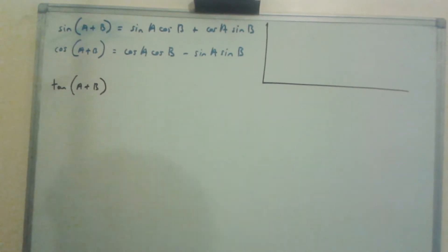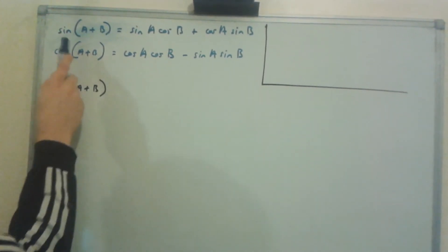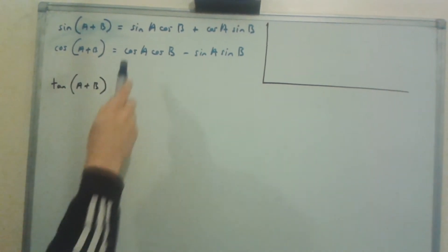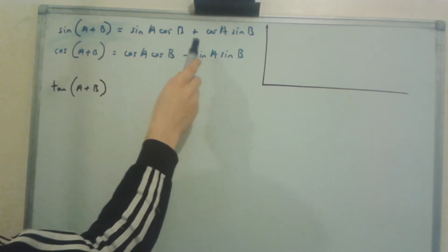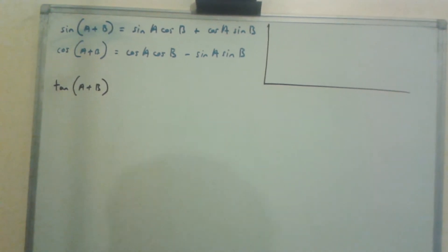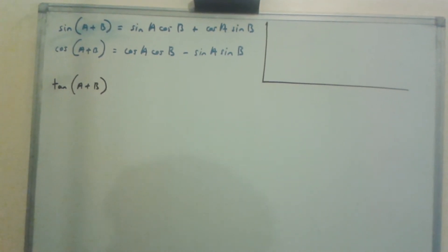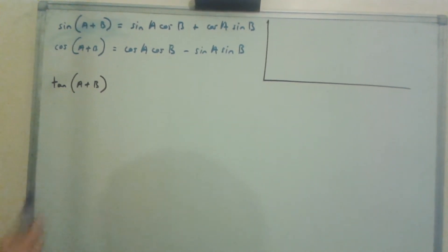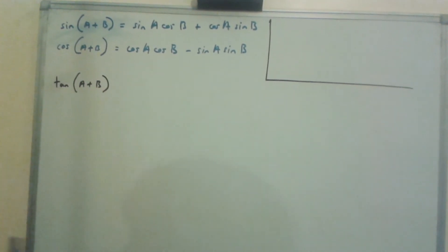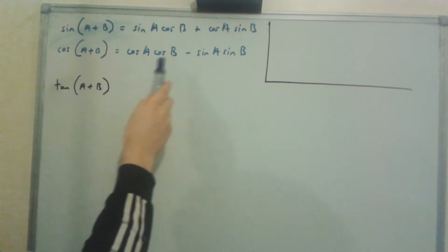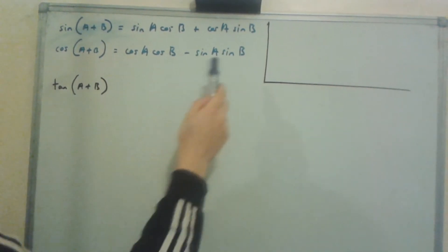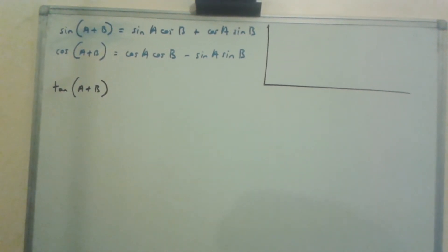First of all, you need to know that sin(a + b) is equal to sin a·cos b plus cos a·sin b. You also need to know that cos(a + b) is cos a·cos b minus sin a·sin b.